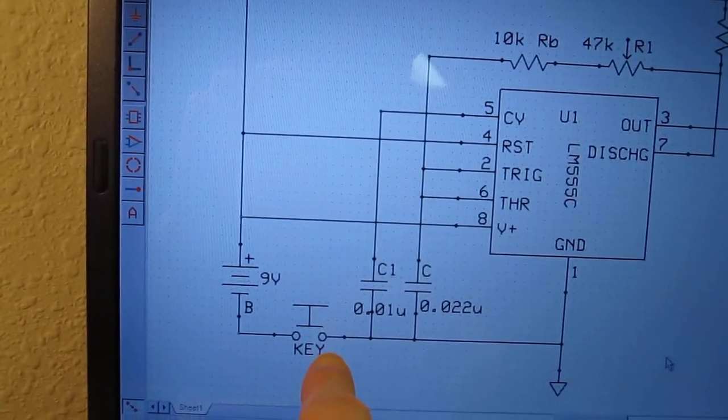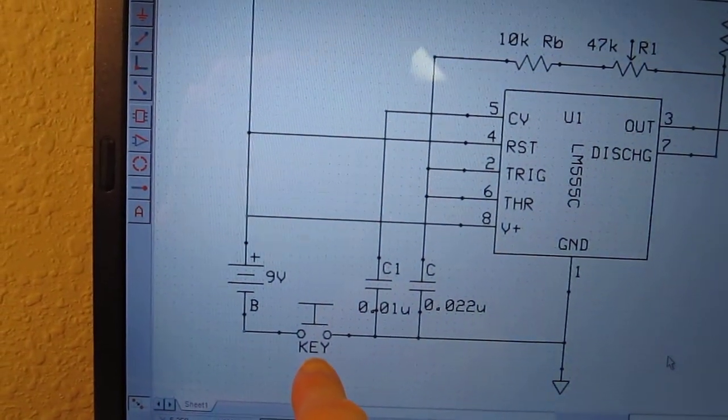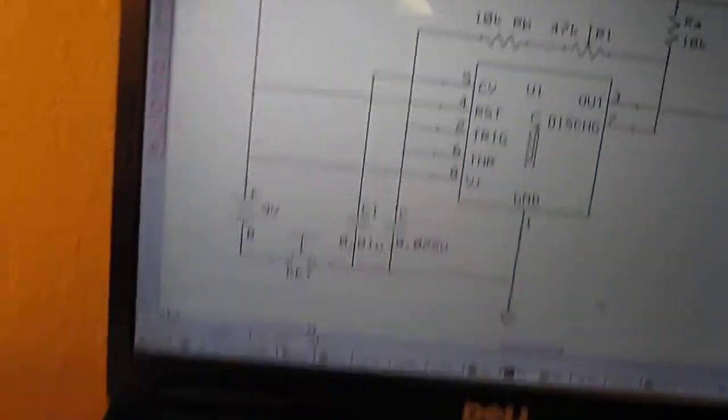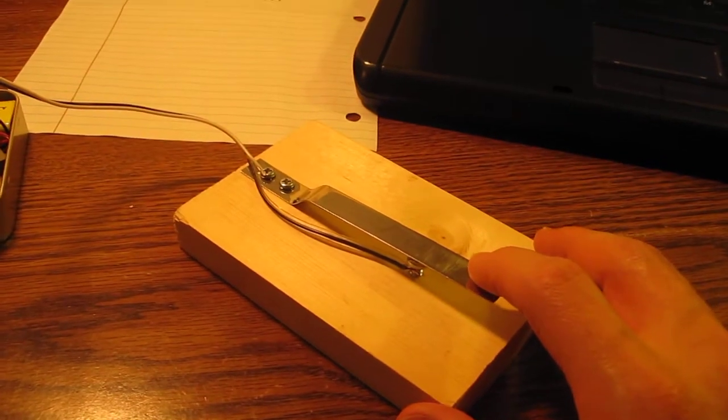I want to redesign this and have a transistor switch here instead, so that no current is actually running through the key. And then the resistance of the key won't affect it.